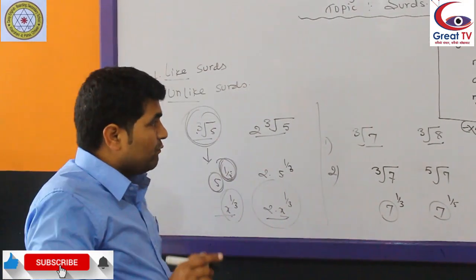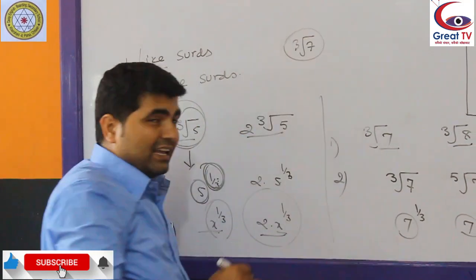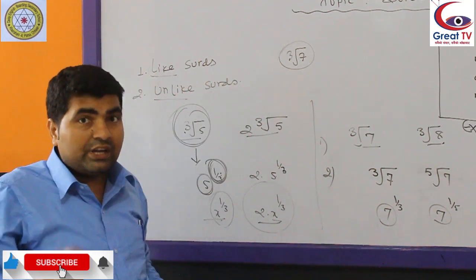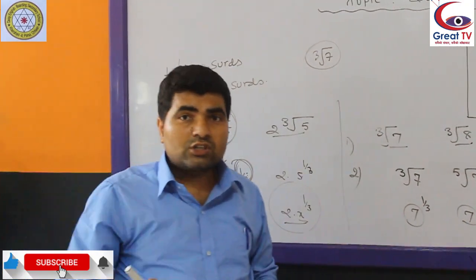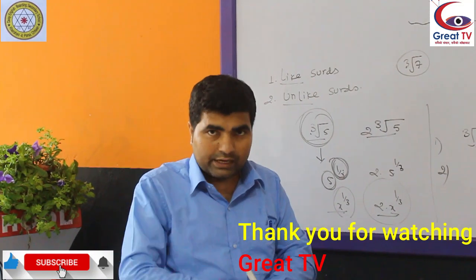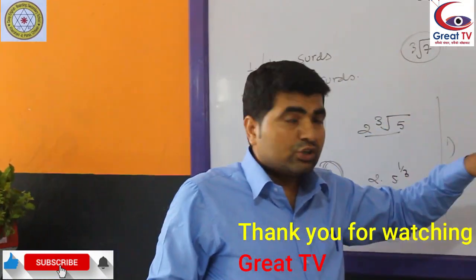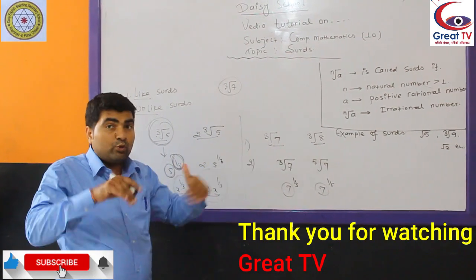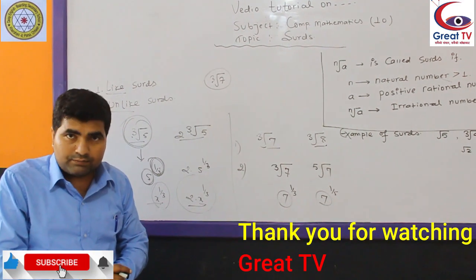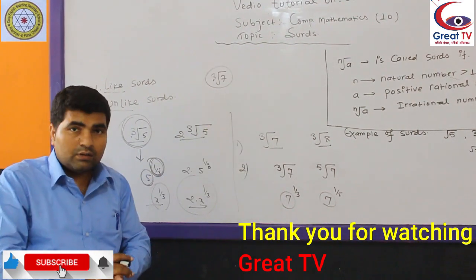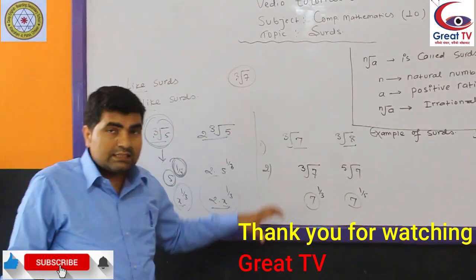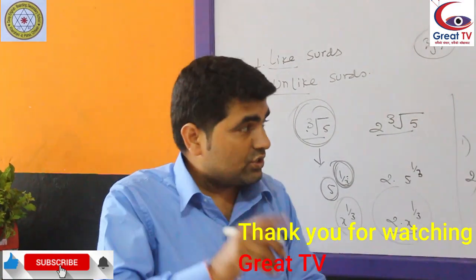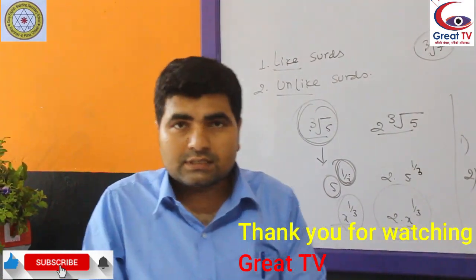Remember, at least two surds are necessary to compare and determine whether they are like or unlike surds. In the next class, I will discuss what types of surds we can add, subtract, multiply, and divide. If you found this video helpful, do not forget to subscribe to this channel. Thank you.